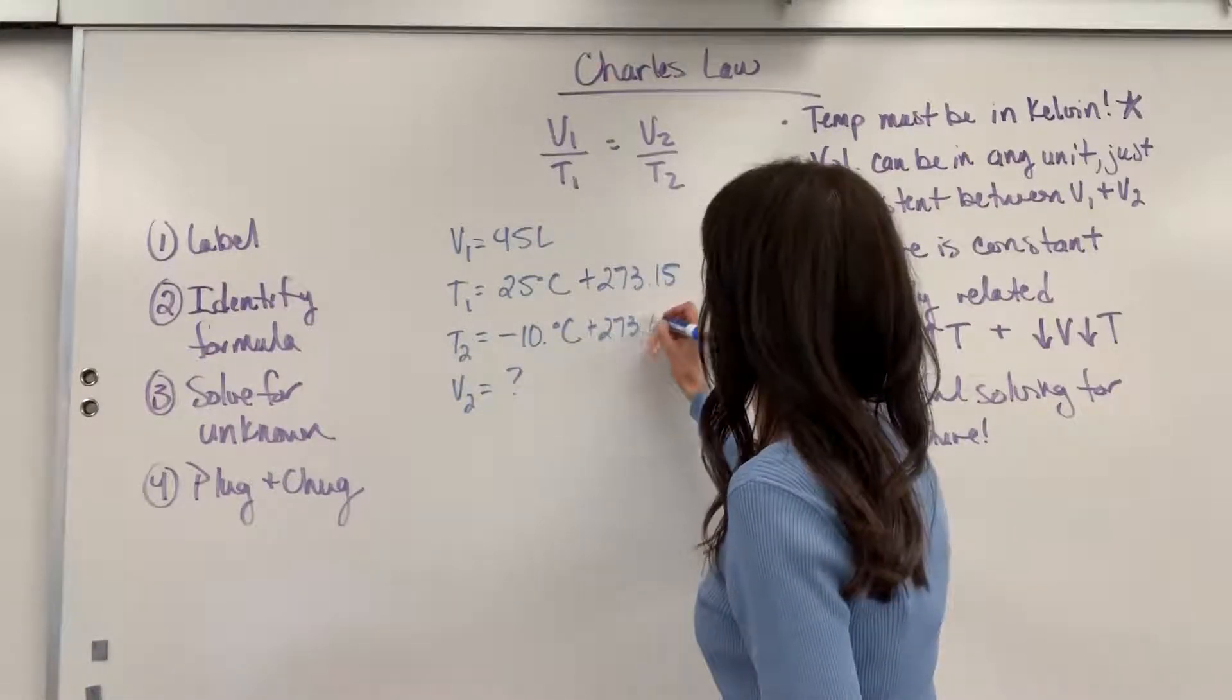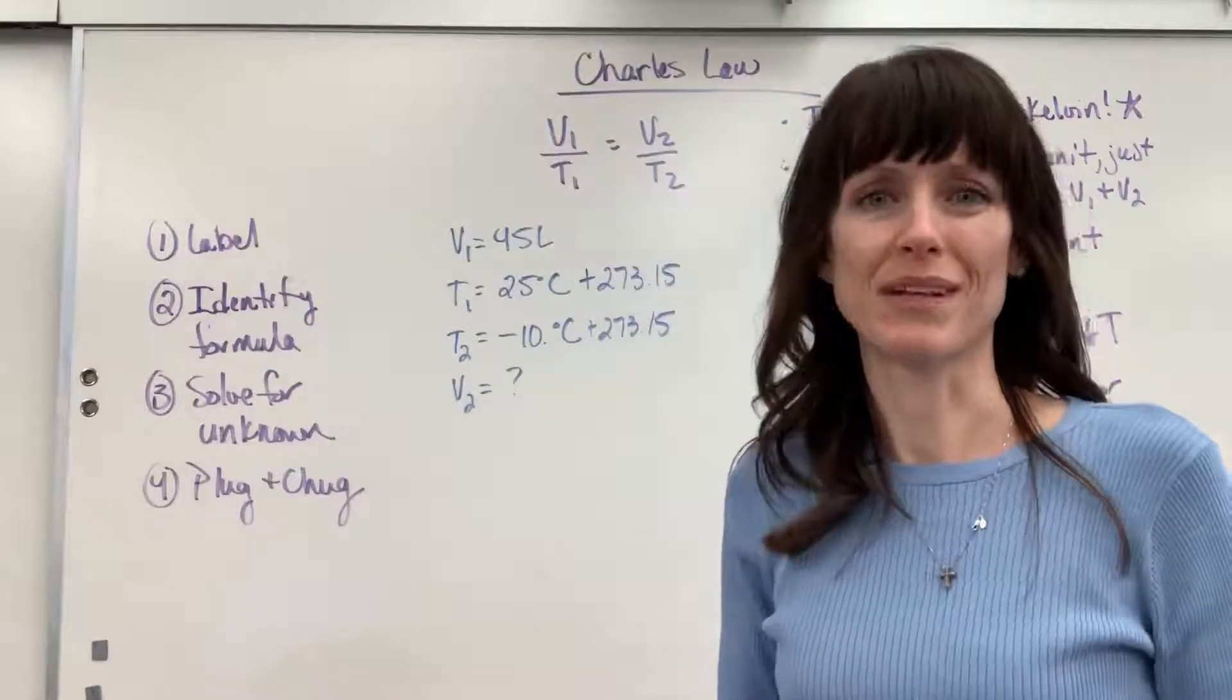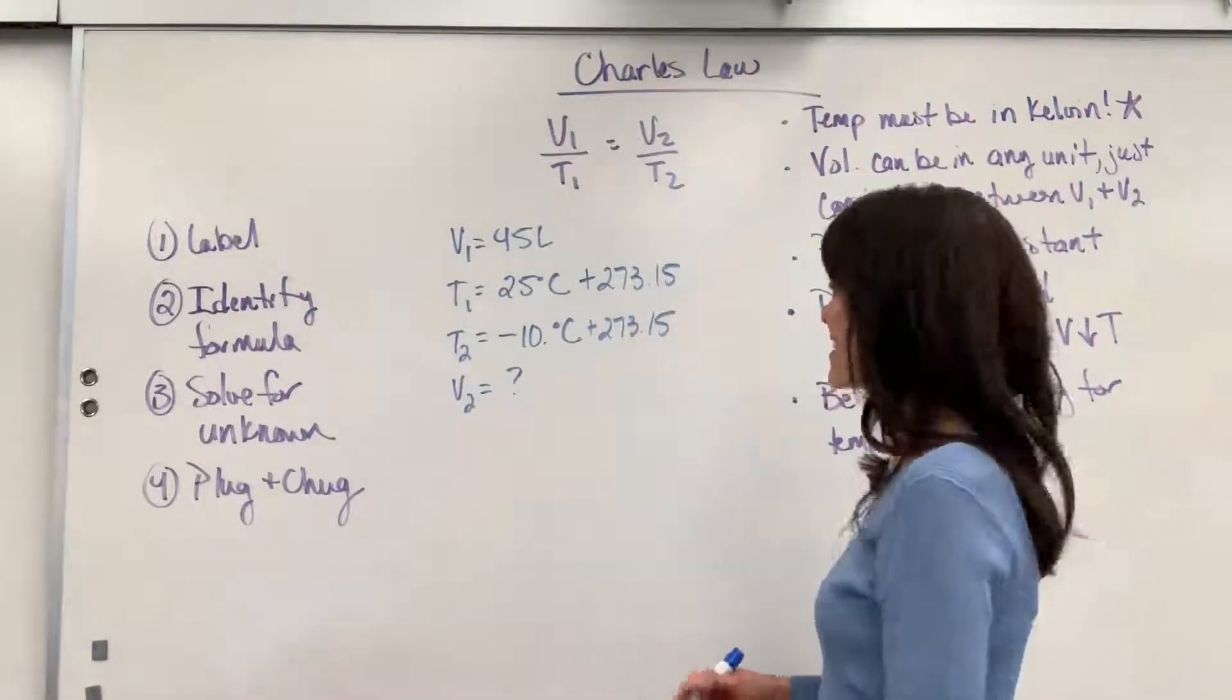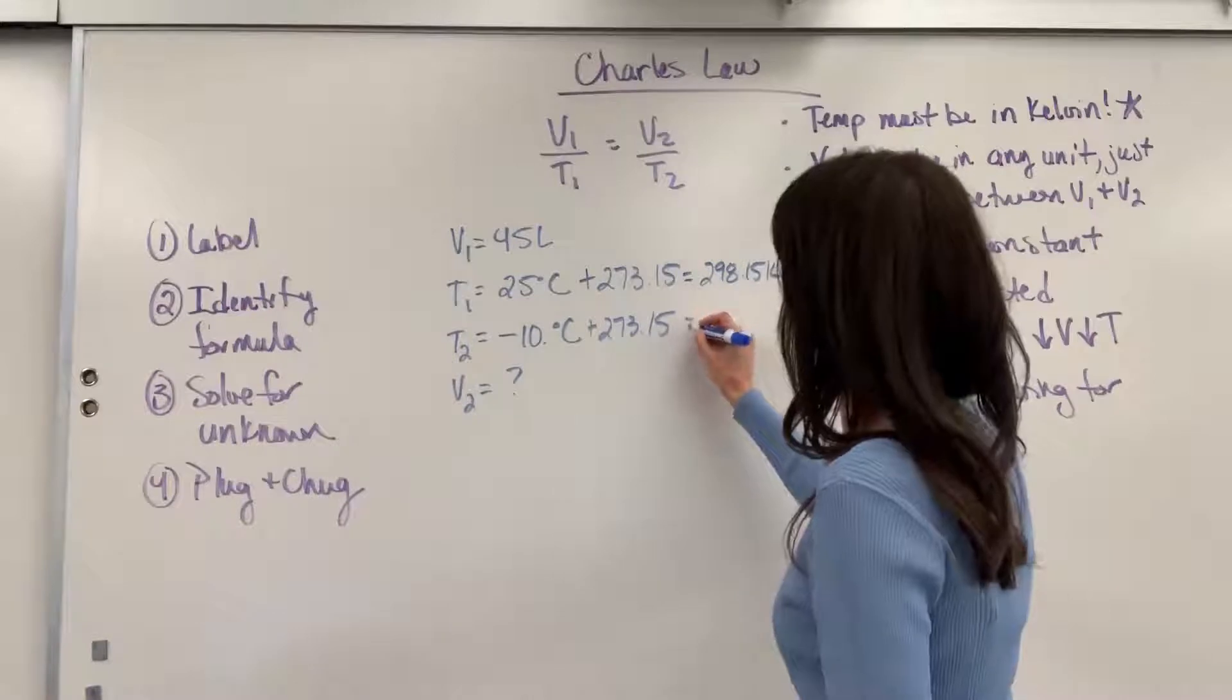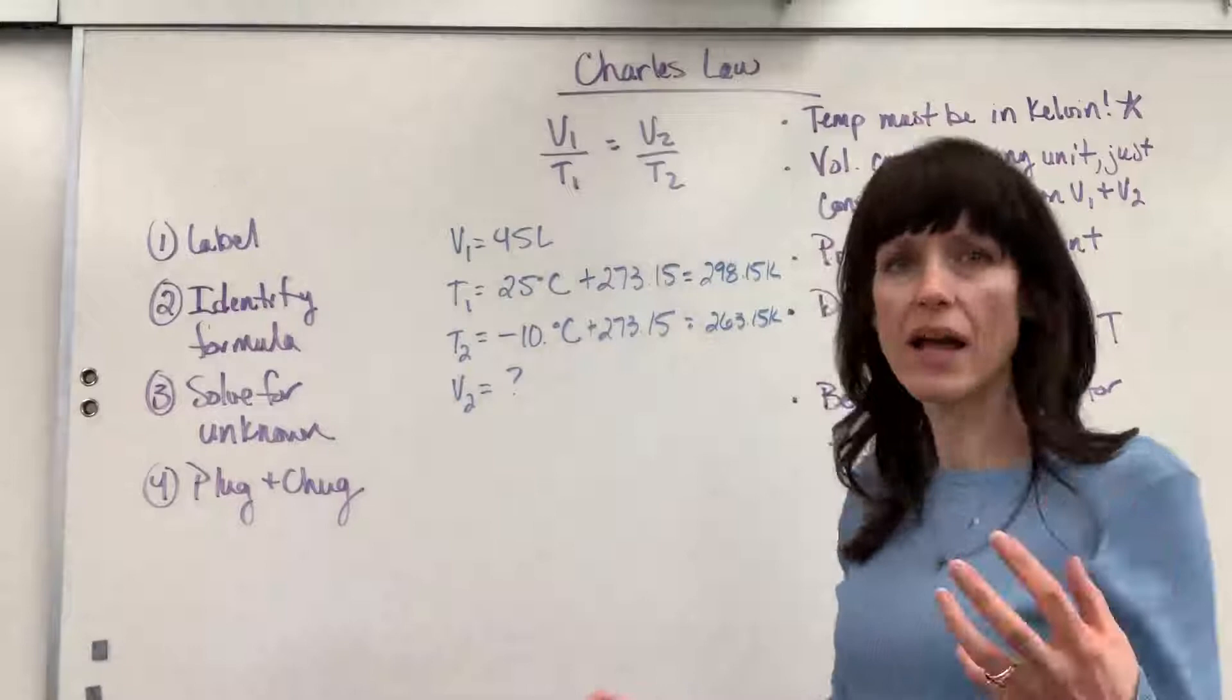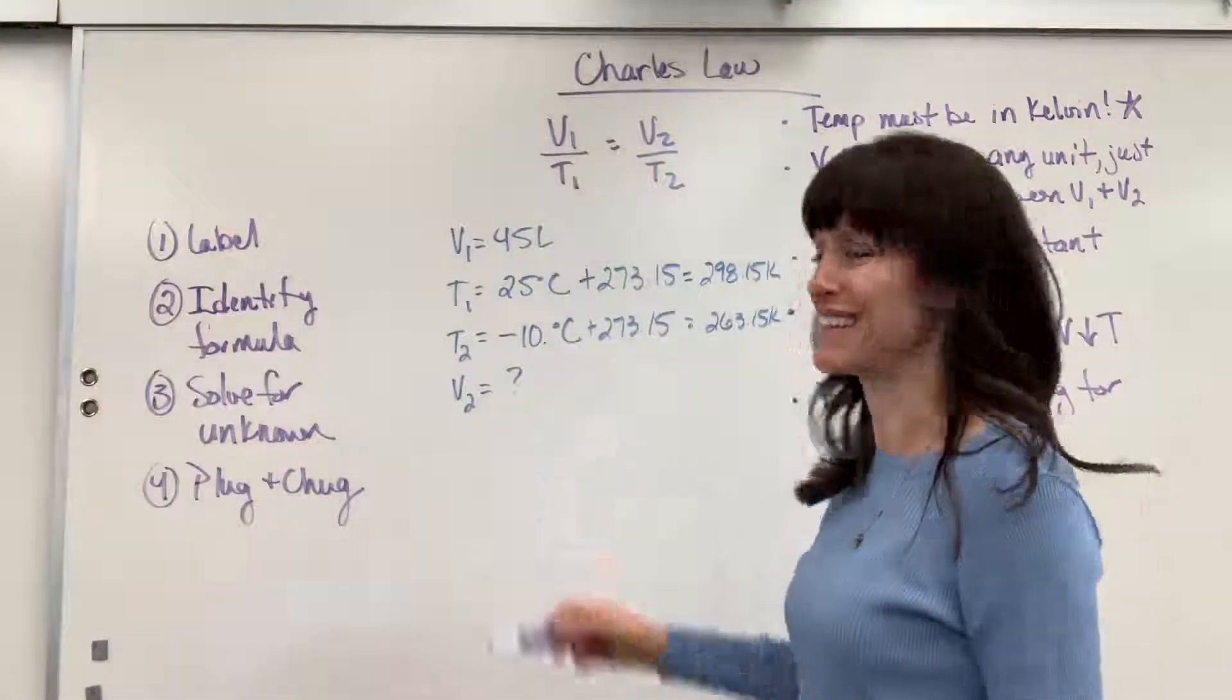Let's go ahead and add the 273. If you're in my honors class, just do 273. If you're in my AP class, I want you to do the 273.15. Let's add these together and I'm going to get 298.15 Kelvin and 263.15 Kelvin. So now I have the right unit, and I find to be liters here, I just know my final answer will be in liters.